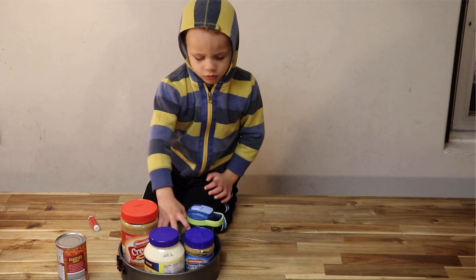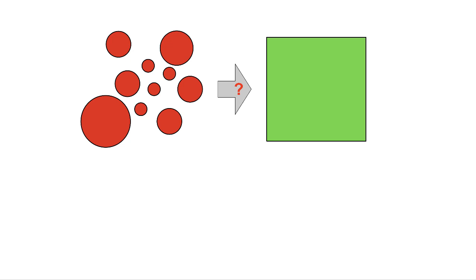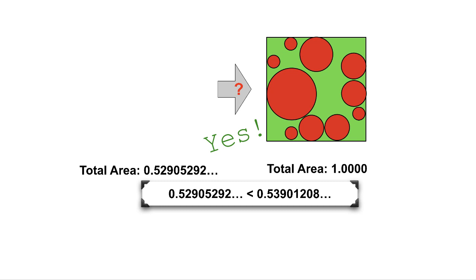These difficulties make it relevant to establish simple criteria for the feasibility of a packing problem. Can this set of circles be packed into this container? It turns out that we can answer this question simply by considering the resulting packing density, that is, the ratio of areas. For this instance, the packing density is small enough to guarantee a packing, regardless of the particular radii.